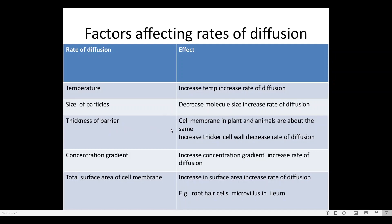Thickness of barrier: cell membranes of plants and animals are about the same thickness. An increased, thicker cell wall decreases the rate of diffusion. Concentration gradient: increased concentration gradient increases the rate of diffusion — there is a direct relationship between concentration gradient and diffusion rate.